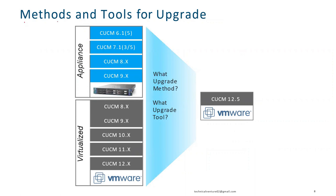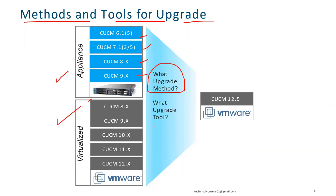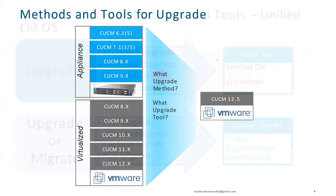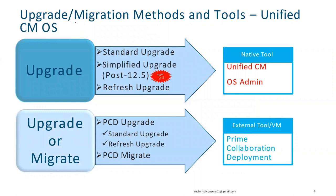Now the methods and tools for upgrade: whether it's on MCS or virtualized. If you are using version 9, 8, 7, or 6, what upgrade method can you use? And if you are using versions 8 through 12 on VMware virtualized, what upgrade tool can you use? For upgrade methods, we have standard upgrade and refresh upgrade. The simplified upgrade becomes available after upgrading to 12.5, and with it you can upgrade the whole cluster in one go.